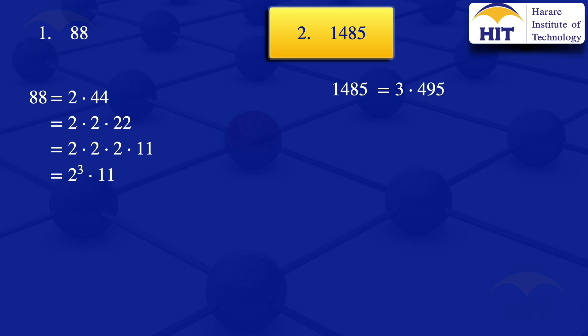We go on and try again for the smallest prime to see if it is a factor of 495. 2 is not a factor, so we move on to 3. The 3 is a factor of 495, and we can write 495 = 3 × 165. Our expression becomes 3 × 3 × 165.